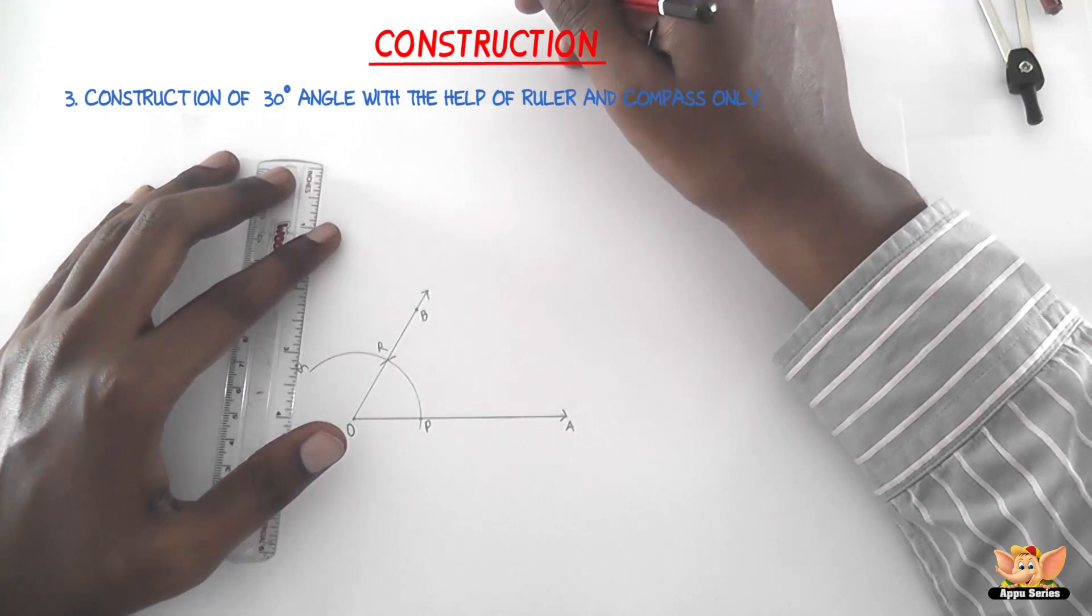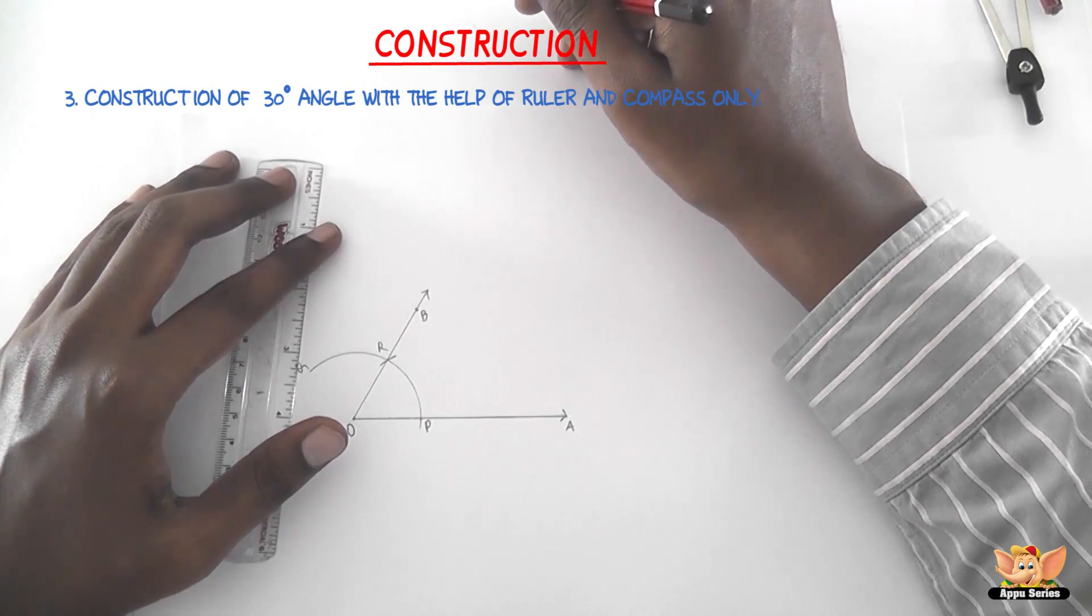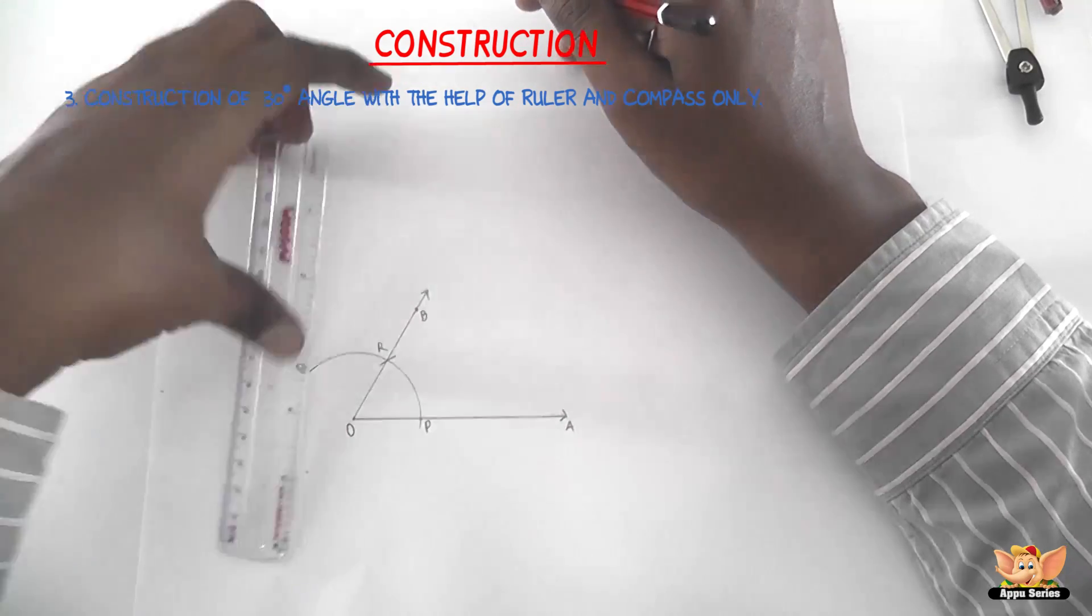I have already shown you how to bisect an angle just by using a compass and a ruler. Let's do the same now.